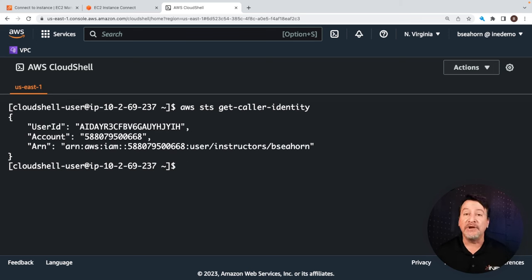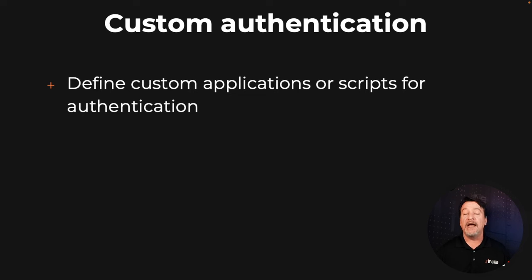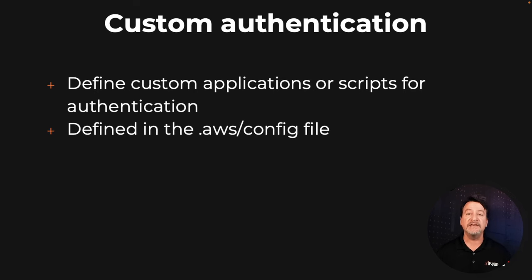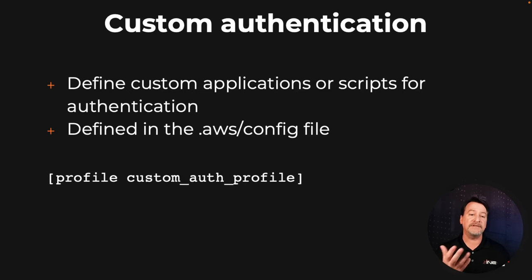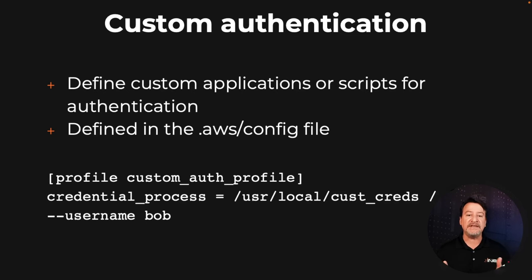Now, last subject: doing custom authentication with the AWS CLI. About three or four times when I was out in the field working with customers, I would run into this situation — they needed a custom authentication method for the AWS CLI command. It's very easy to do. All you have to do in the configuration is set up a custom profile. And then in that custom profile, whatever you name it — in this case I've called it custom auth profile — simply set a variable equal to either the script or the application that will do the custom authentication.